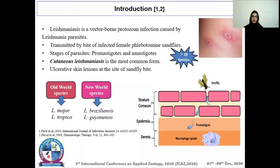First, the introduction. Leishmaniasis is a vector-borne protozoan infection caused by Leishmania parasites, transmitted by the bite of an infected female sandfly. More than 20 such species are involved. In the life cycle of Leishmania parasites there are two stages: the promastigote stage, which is motile, and the amastigote stage, which is non-motile. Among all forms of leishmaniasis, cutaneous leishmaniasis is the most common, in which ulcerative skin lesions are formed at the site of the sandfly bite.